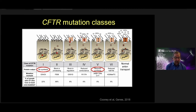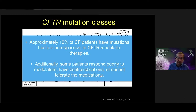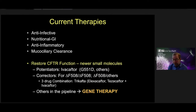Mutations that are premature stop codon mutations or some splicing mutations create a situation where there's no or very little protein for any modulator drugs to act upon. These patients have unmet needs where gene therapy could potentially play a role. Approximately 10% of CF patients have mutations unresponsive to modulator therapies, and some do not respond well or have contraindications to those medications. There are also newer small molecule therapies and other things in the pipeline, and I'm going to focus on gene therapy.